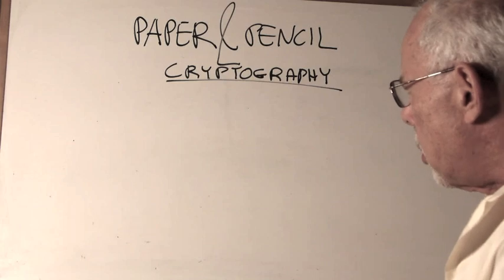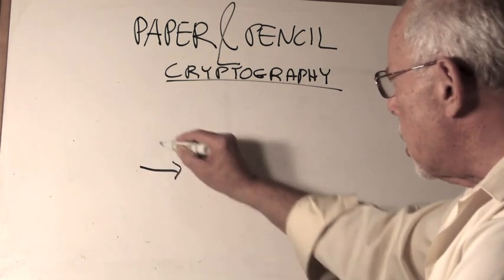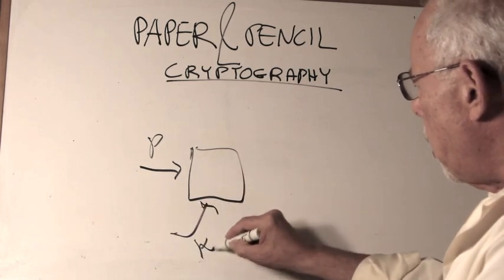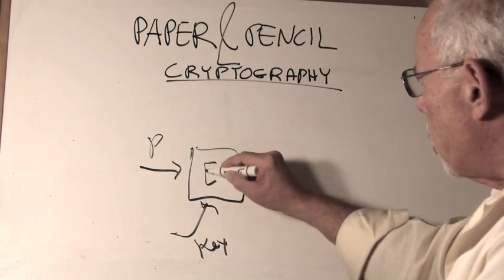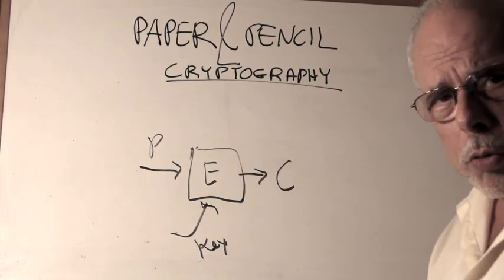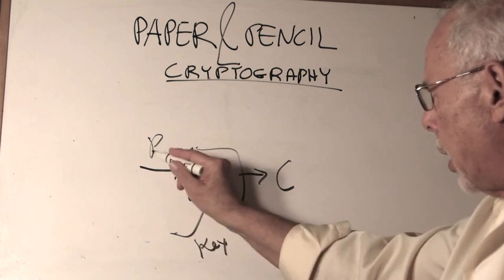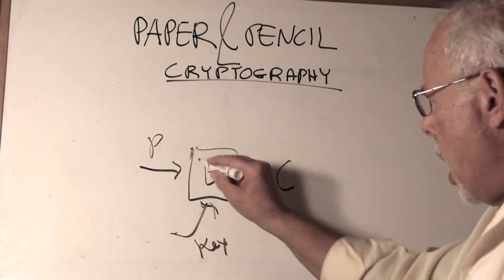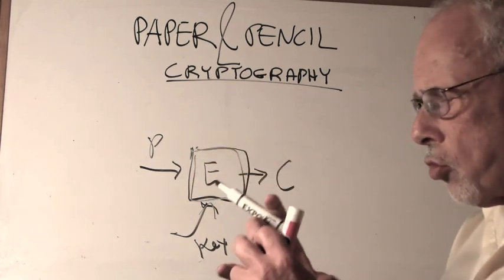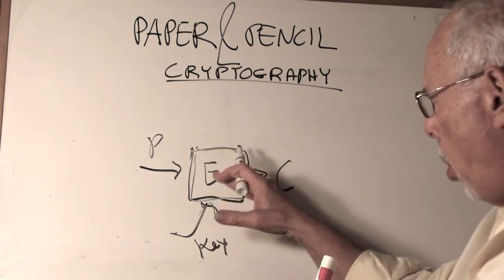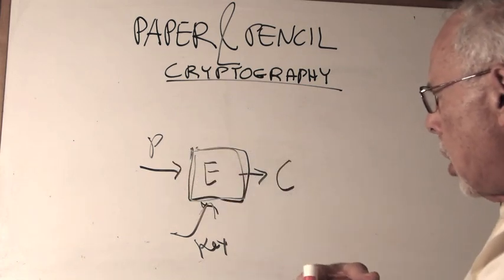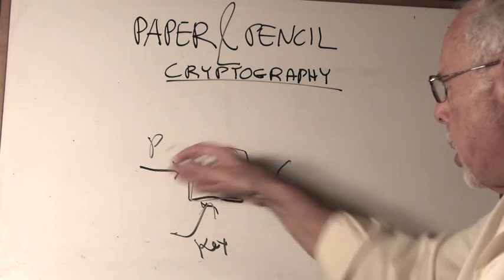If you remember, we talked about the idea that you have a plaintext, we have a key, they all go into an encryption mechanism that produces the cipher. That's how we do things in cryptography. Plaintext, cipher, with a key. This box, this is the encryption box. It's the box that has the mechanism to transfer the P to the C.